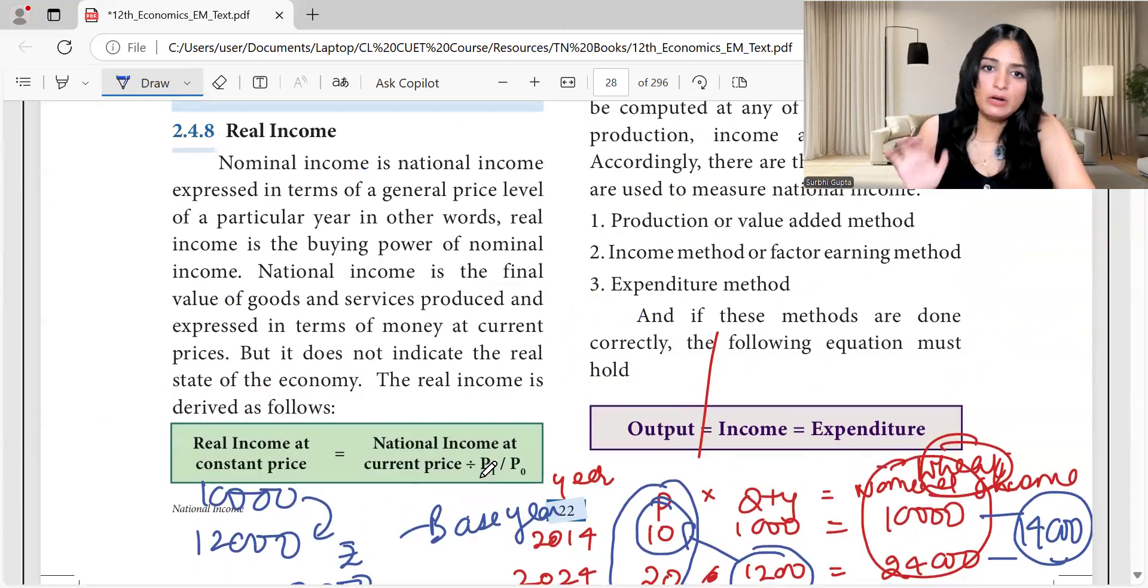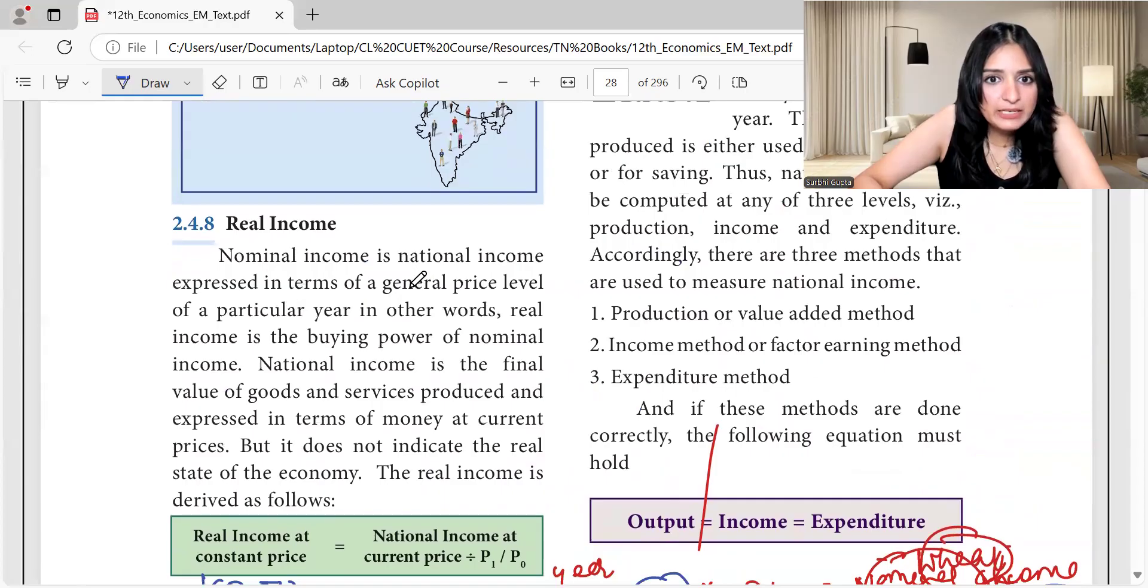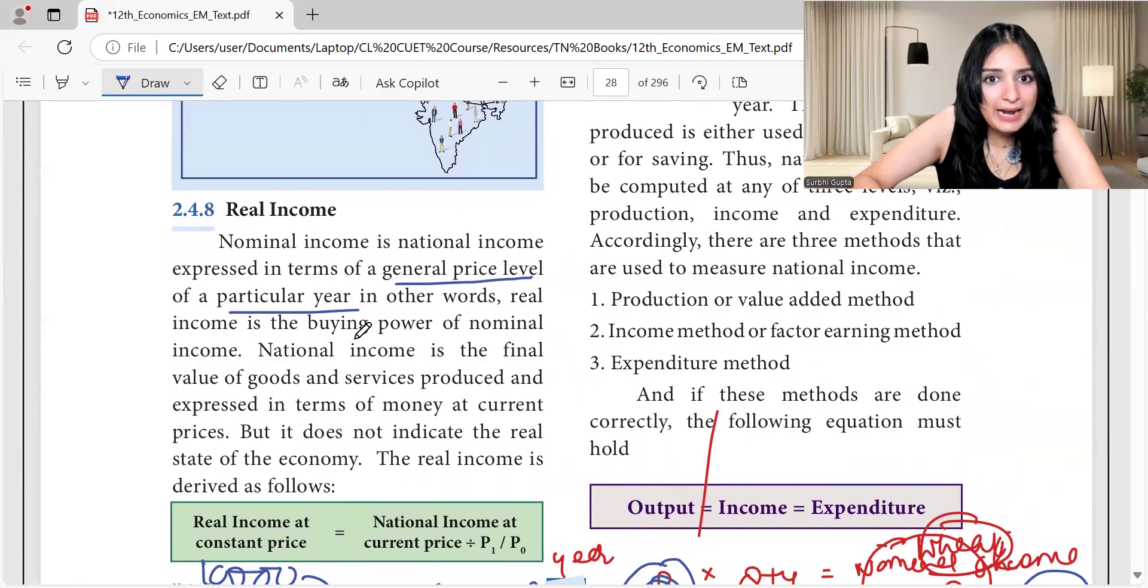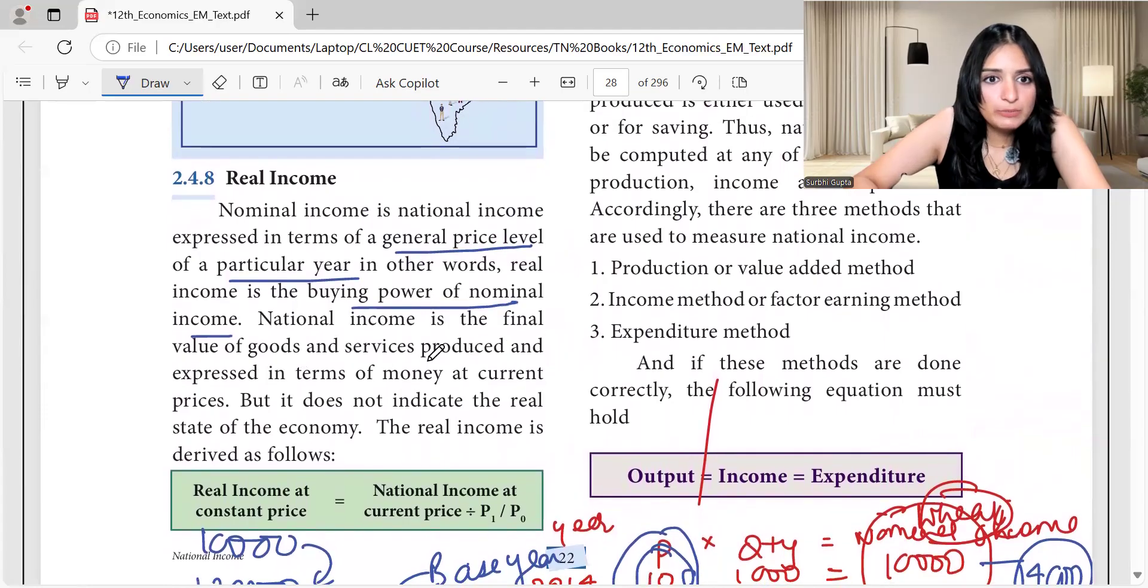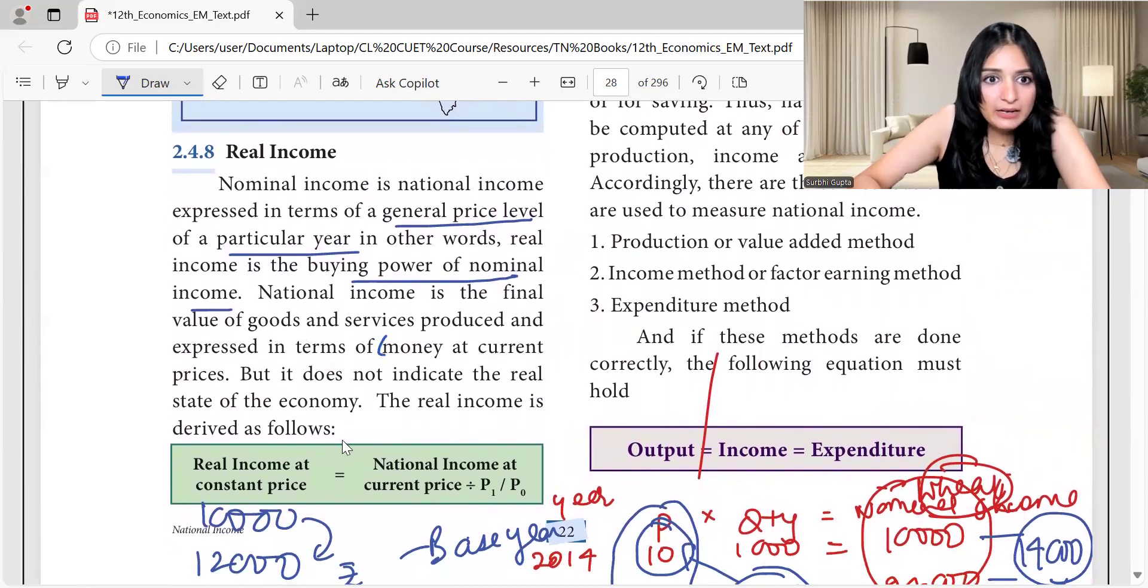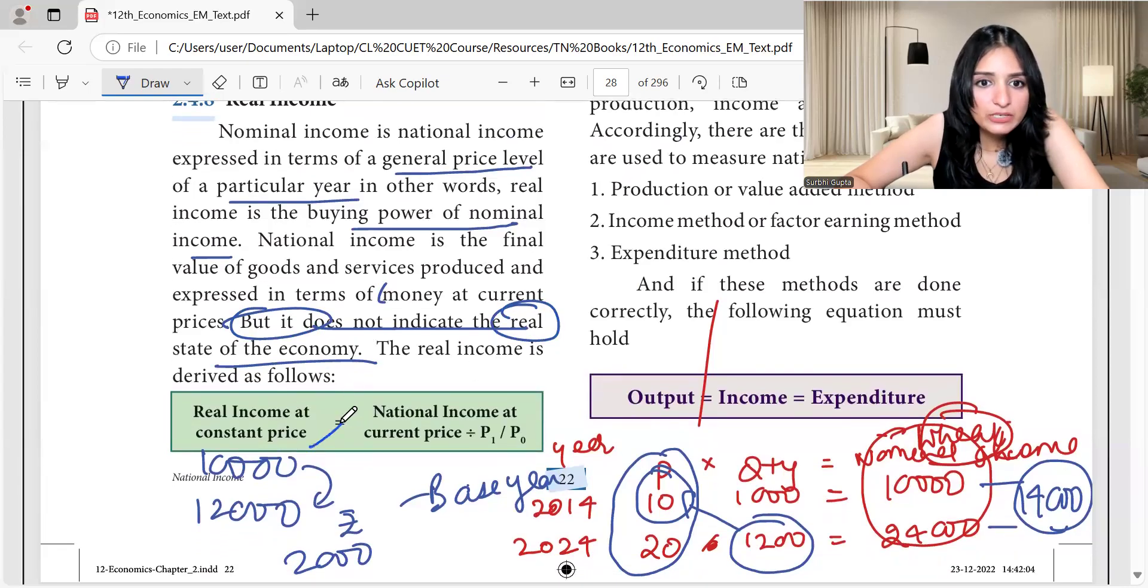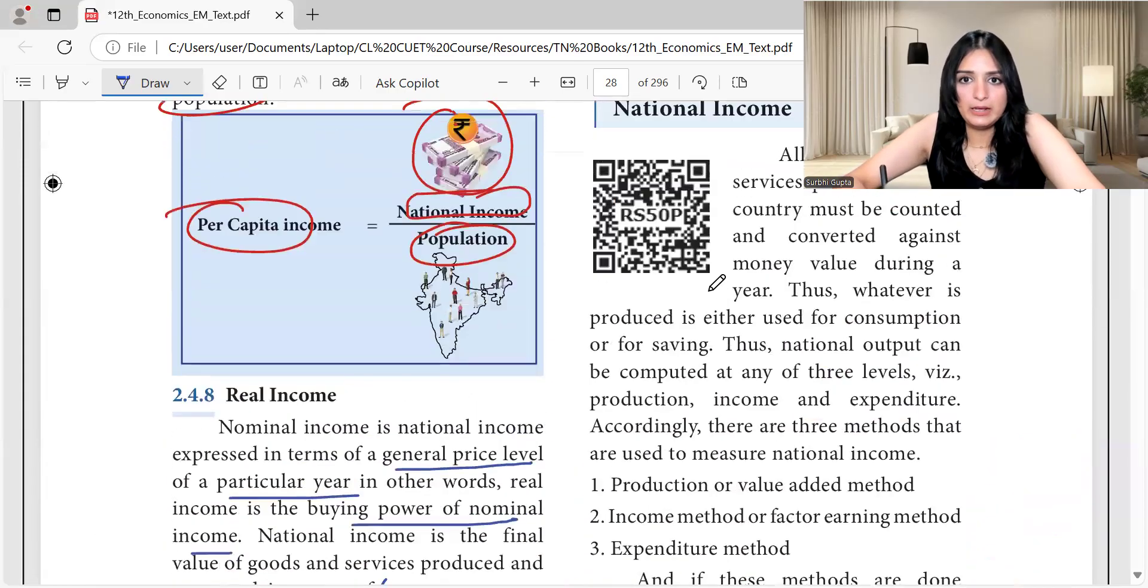I hope that's clear. That was the example. Now let's read what is written here. Nominal income is national income expressed in terms of general price level of a particular year. In other words real income is the buying power of nominal income. National income is the final value of goods and services produced and expressed in terms of money at current prices. It does not indicate the real state of the economy. The real income is derived by real income at constant prices is national income at current prices. So this is a technical thing. I hope you understood what I am trying to explain here.